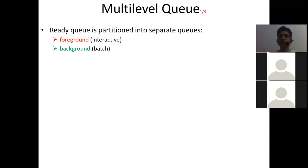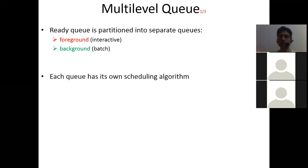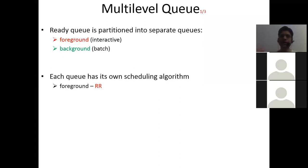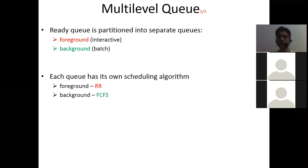So, this is how the ready queue is partitioned into separate queues. Now, each queue has its own scheduling algorithm. Since we have bifurcated our ready queue into foreground and background, we can implement our scheduling algorithm on each queue separately. For foreground, round-robin is suitable because in foreground we need interactive processes — we have to continuously switch between processes. For background, we use first-come, first-served.